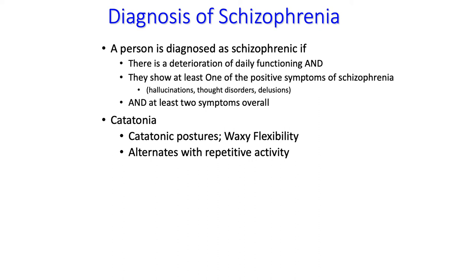Another thing that leads to an immediate diagnosis of schizophrenia is if the person displays catatonia. In catatonia, the person alternates between a fixed catatonic posture — almost like a mannequin frozen in place. You can rearrange their arms, legs, and head position and they will hold the new position, known as waxy flexibility. These catatonic trances then alternate with periods of repetitive activity, such as rocking back and forth for hours, repetitive muscle tics, or pacing back and forth. When a person flips between these two states, it's a clear sign of schizophrenia.